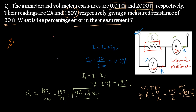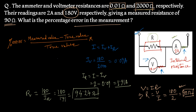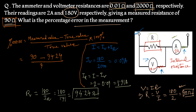Now applying the percentage error formula: percentage error equals measured value minus true value divided by true value into 100%. The measured value is 90 ohm and the true value is 94.24 ohm. This gives minus 4.5% error. This is the procedure by which we determine the percentage error for this kind of combination.